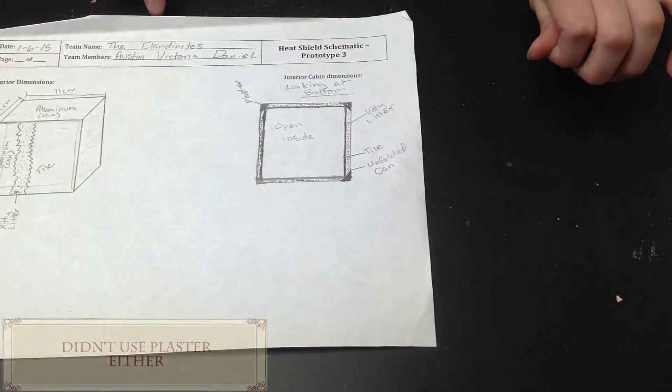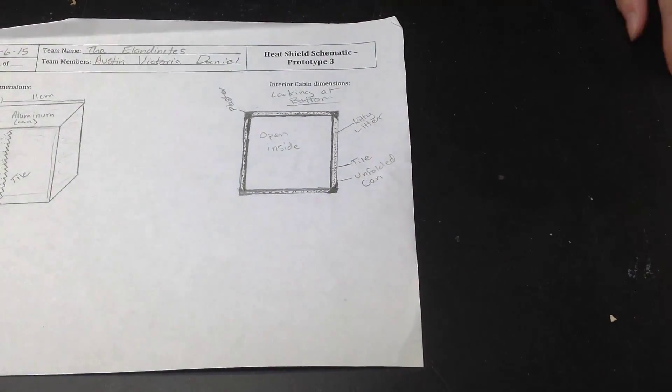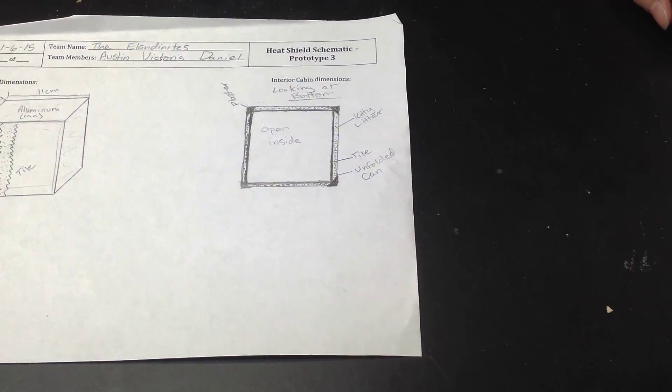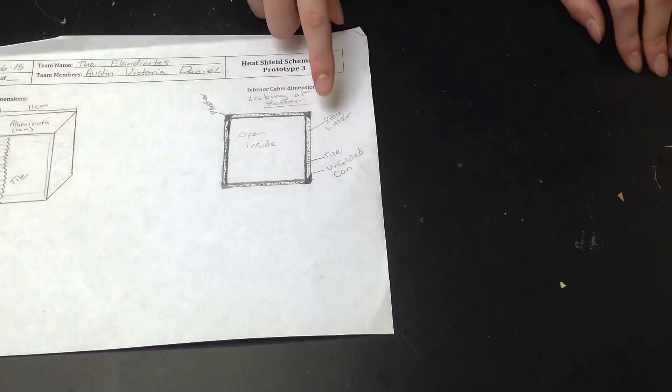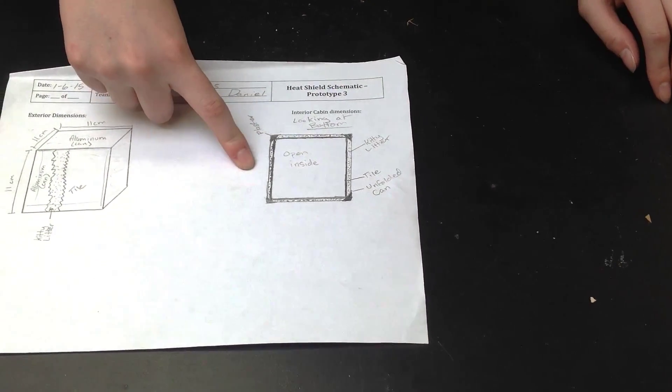Within the cube there would be our astronaut, or our chocolate bunny, which would be kept safe through the insulation and infrastructure of our design.